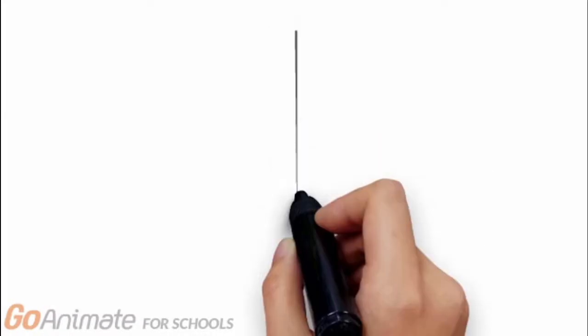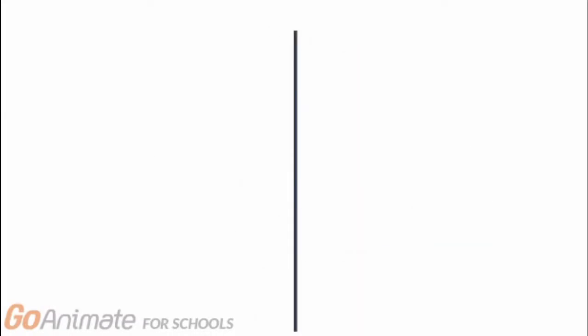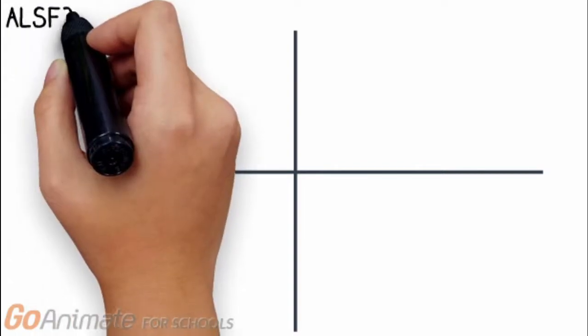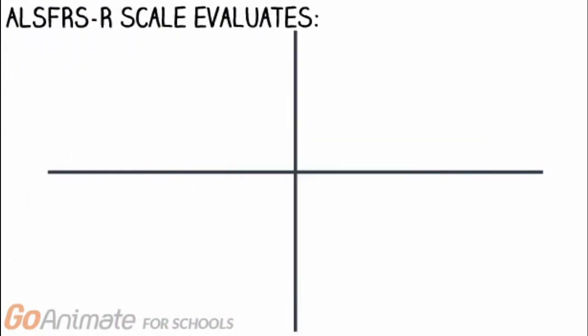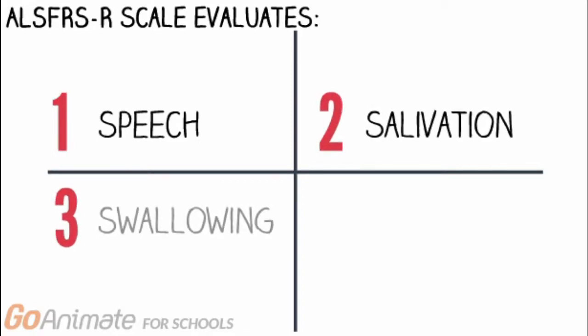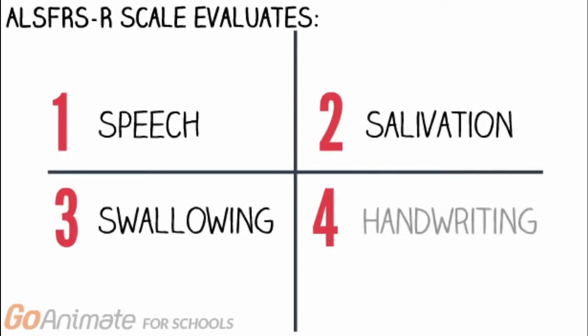As Dr. Turnbull stated, there are several methods that can be used. Activity limitation is measured using a 12-item scale called ALS FRS-R. This assessment is done by evaluating speech, salivation, swallowing, handwriting, and cutting food and handling utensils.